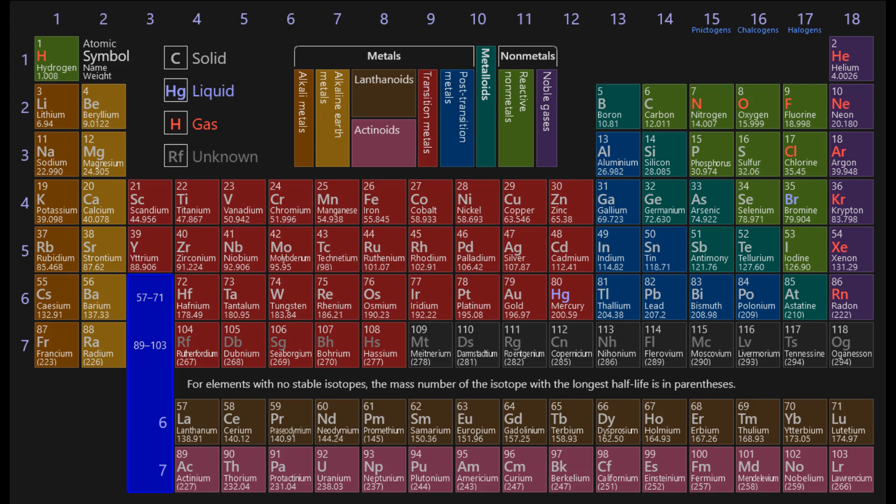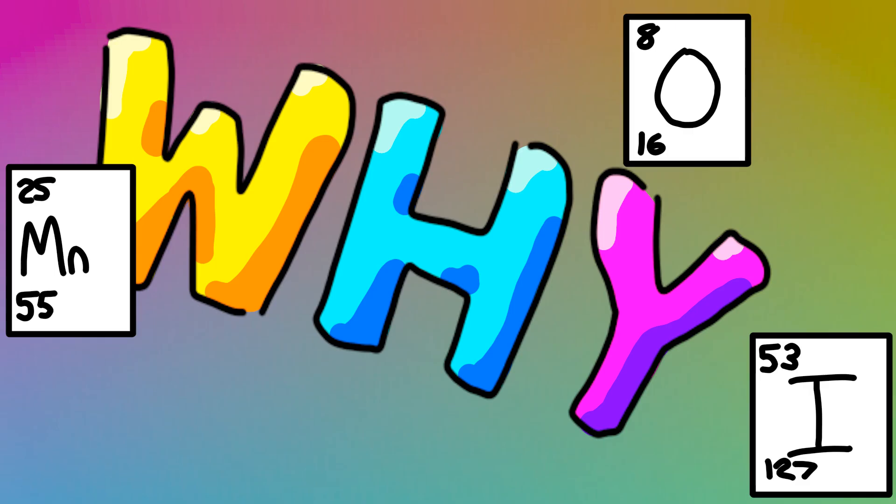The F block, which is the lanthanoids and actinoids that are kind of shoved off into the bottom, are basically the same thing but for the bigger F orbitals rather than D orbitals. But yeah, that was a little explanation of the periodic table and some other stuff I thought was interesting.